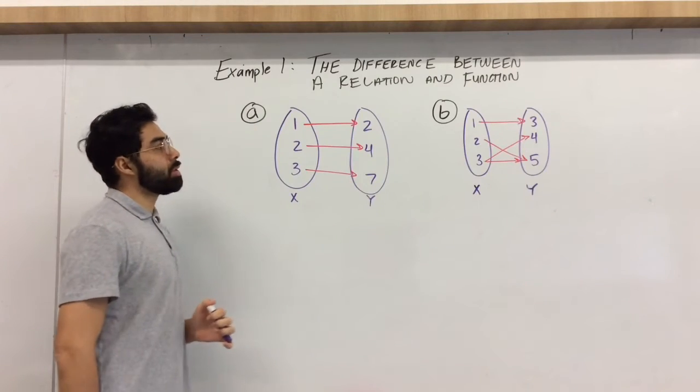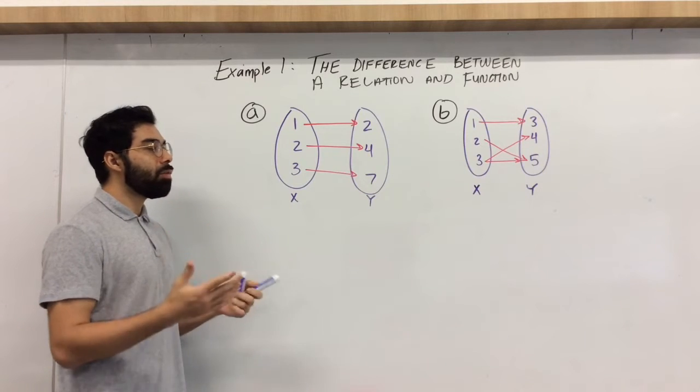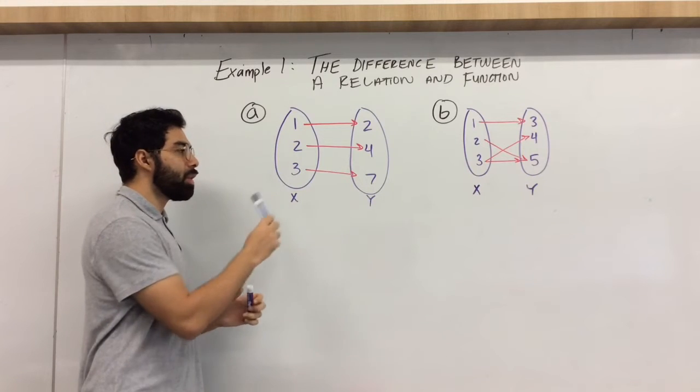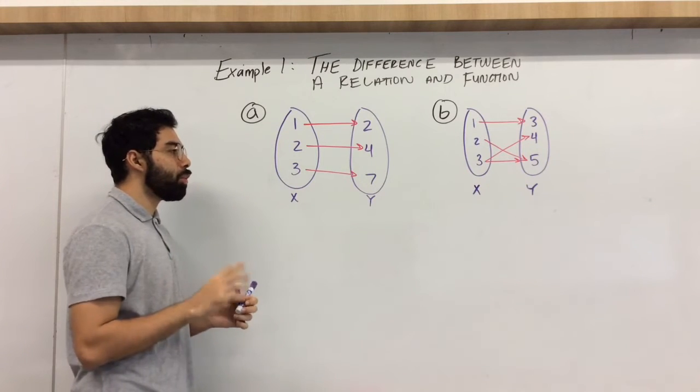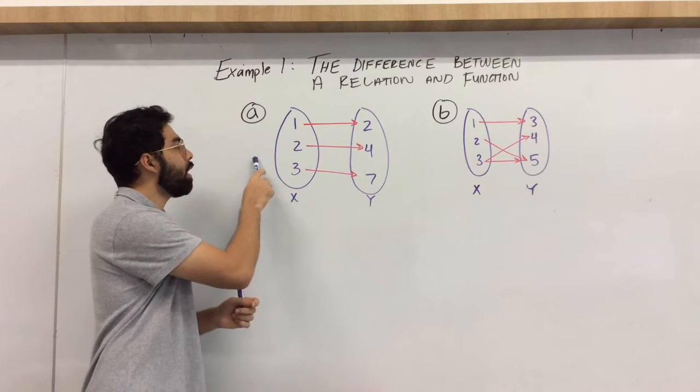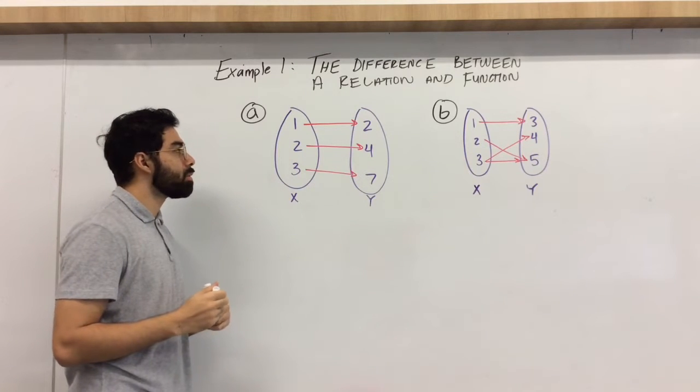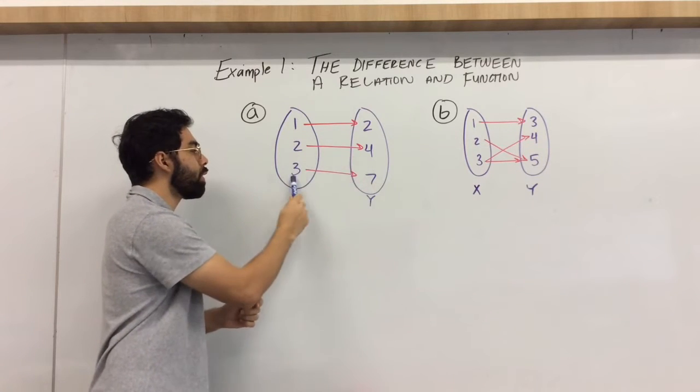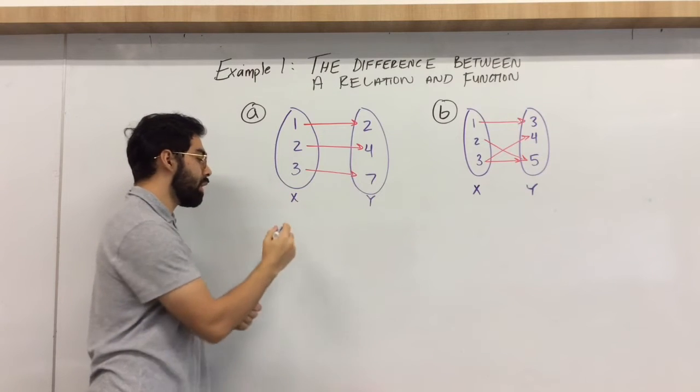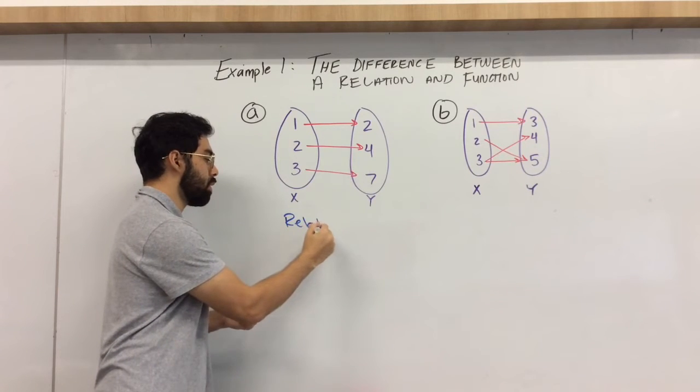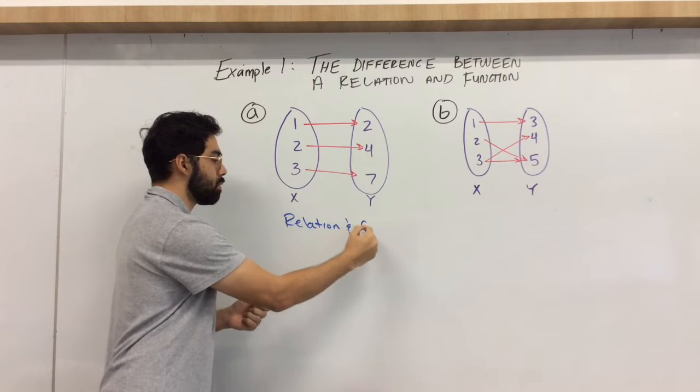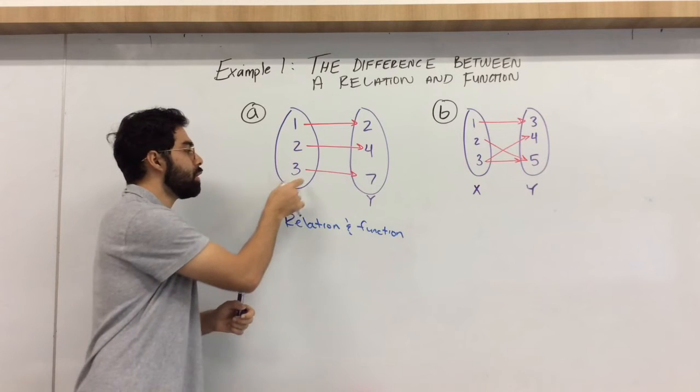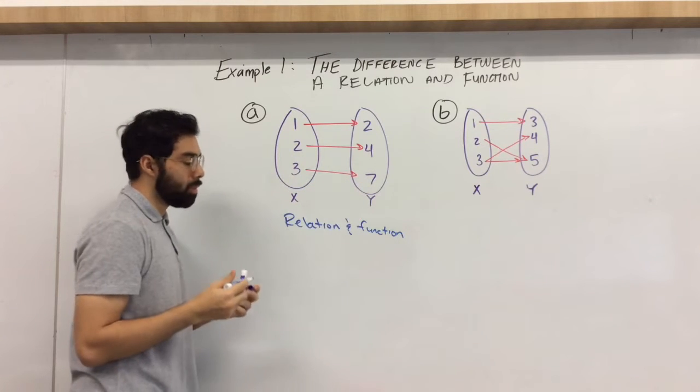Alright, so what's the difference? What's the difference between a relation and a function? Again, everything that you will encounter will be a relation. A relation is an association between x and y values. So inputs and outputs. So a and b is a relation. And in this case, 1 is going to 2, 2 is going to 4, 3 is going to 7. So this would be a relation and function. Each x having only one y.